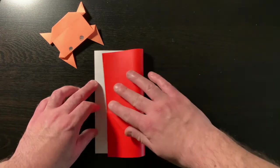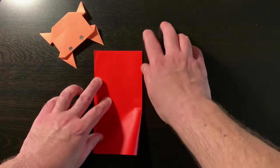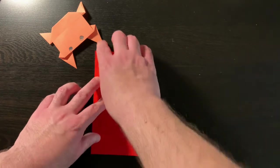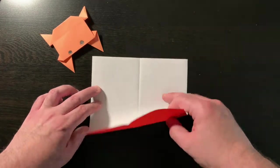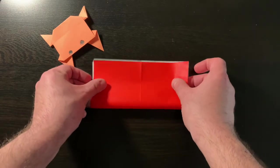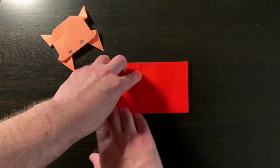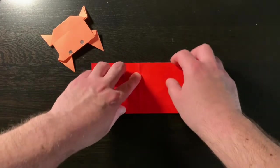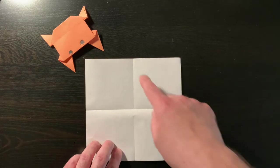We'll start off by creating a little plus sign into our paper. Go ahead and fold it across one way, open it up, and fold it the other way. Just like that.